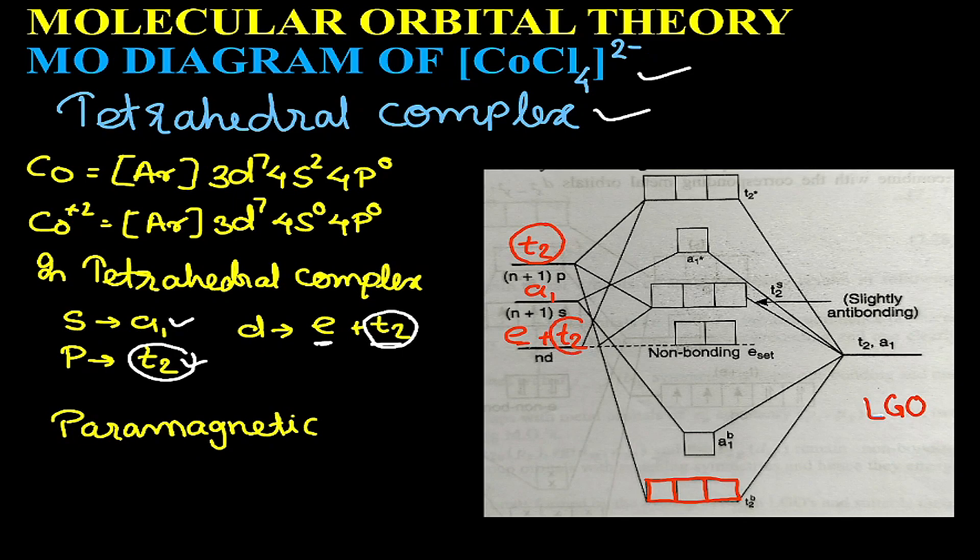T2D, and the T2 of the ligand group. These three orbitals will combine to give T2 bonding, T2 partially anti-bonding, and T2 completely anti-bonding.